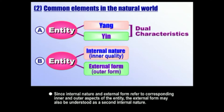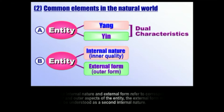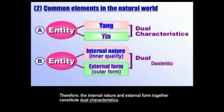Since internal nature and external form correspond to the inner and outer aspects of an entity, the external form can be seen as reflecting that internal nature. One way to understand this is that internal nature and external form correspond to our invisible internal mind and our visible external body — mind and body. Internal nature is our mind, our character, our personality; external form is our physical body. These two dual characteristics are common to everything in the universe, and they reflect characteristics that came from the original source, which is God.